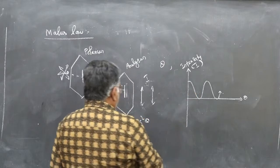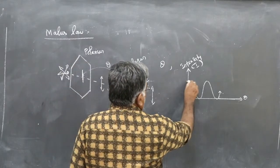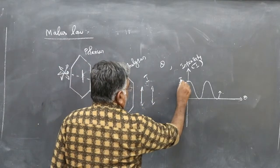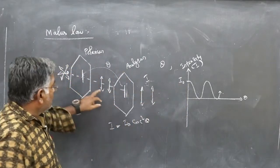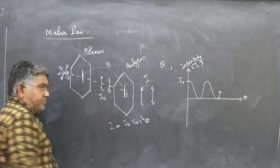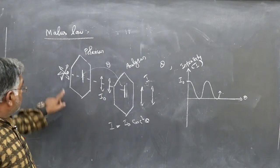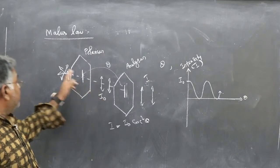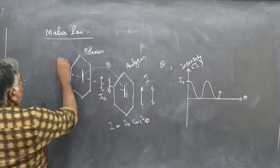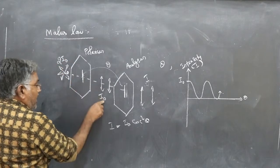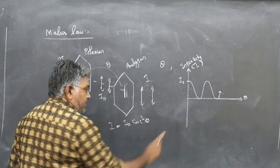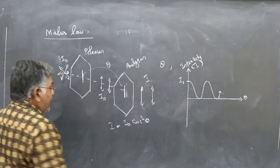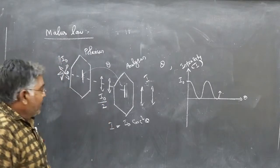Now, what will you mark on this graph? As per this graph, I₀ is the peak value. If you mark I₀ here as the peak intensity, then I₀ should be the intensity after the polarizer. But the given light is unpolarized, so the intensity after the polarizer should be half the intensity of the incident light. So if the incident intensity is 2I₀, then after the polarizer it is I₀, and I = I₀cos²θ.